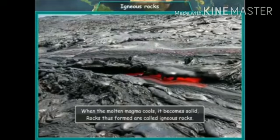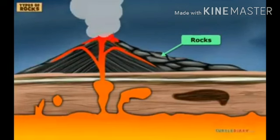The magma is sometimes pushed upwards by the intense pressure of other rocks inside the earth and it gushes out through the very weak spots of the mountains, causing a volcanic eruption. The magma that reaches the earth's surface is known as lava, which then cools down and forms igneous rocks.